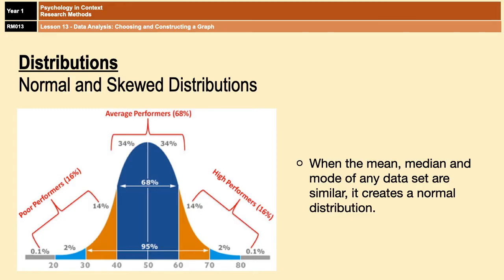So as you can see from the picture, you've got about 68% of the people will be in that center, which will be the average performers, and then you've got the low performers and the high performers on either side.